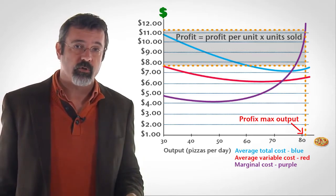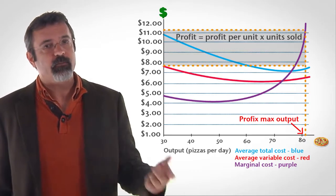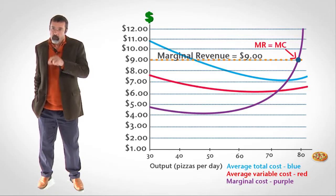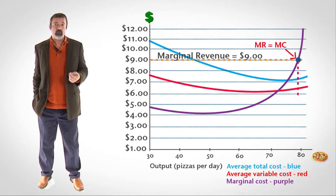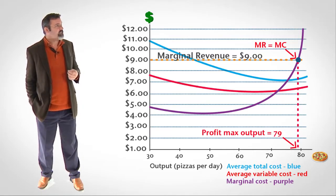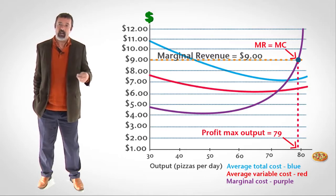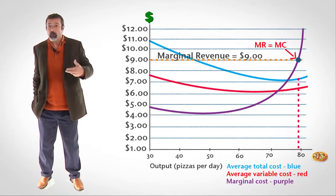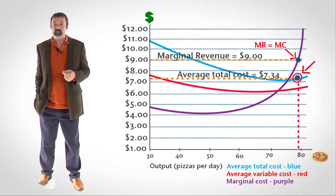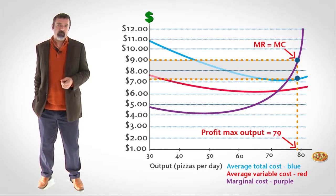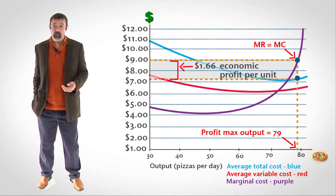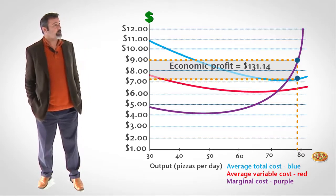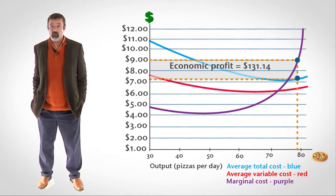Now let's think about what happens to our pizzeria if the price of pizza falls. Suppose the price of pizza falls to $9. Step 1 is to find the point at which MR equals MC. Step 2 is to follow that point down to the horizontal axis to find the profit-maximizing output level — now 79 pizzas per day. Step 3 is to follow the profit-max output back up to the average total cost curve, where the firm's average total cost is $7.34 per pizza, earning $1.66 in economic profit per pizza. Step 4 is to measure the area between the price and average total cost — the firm's economic profit is $131.14.